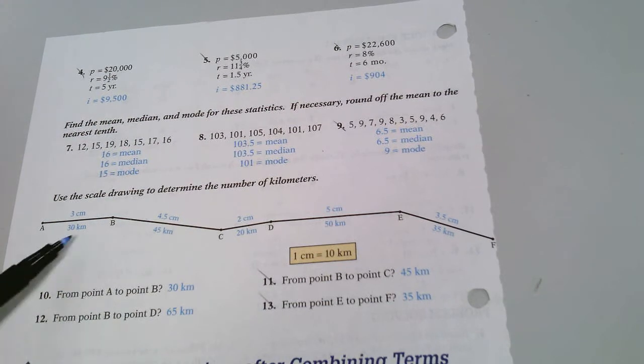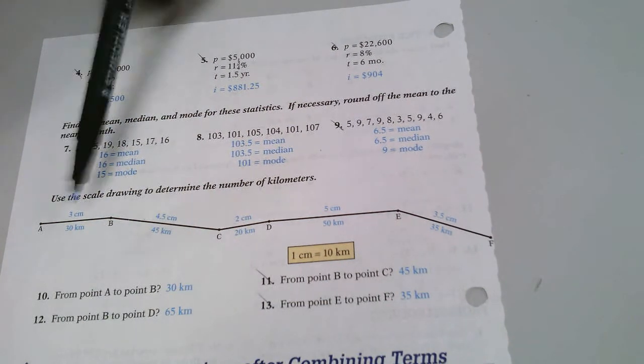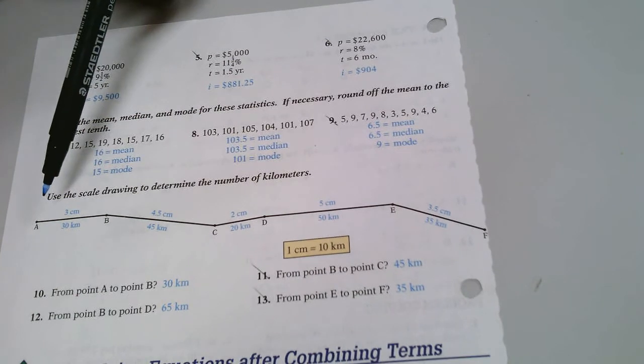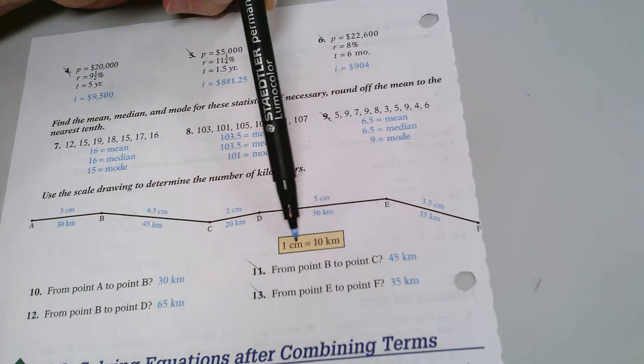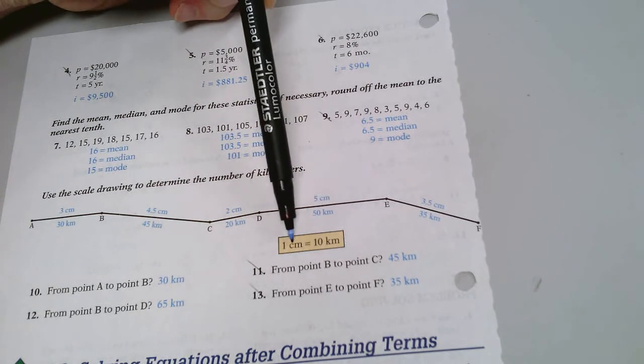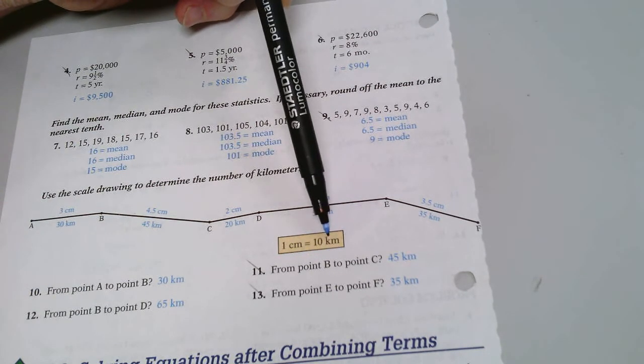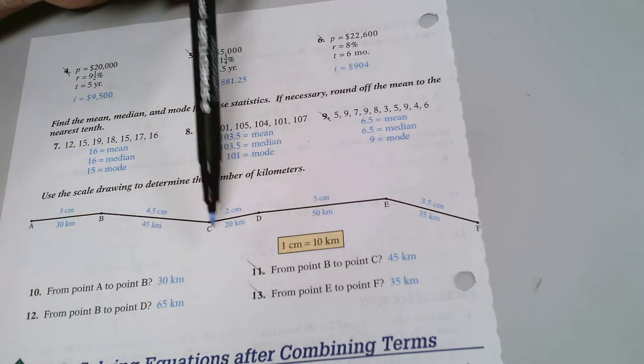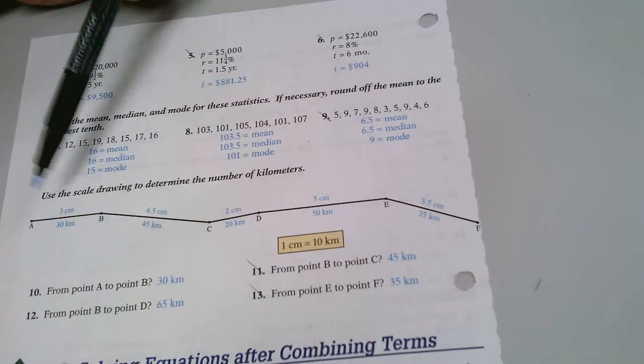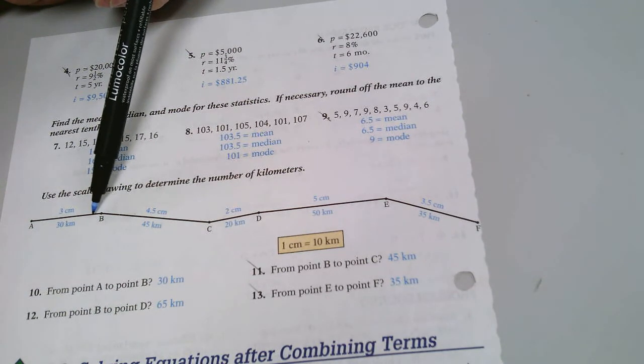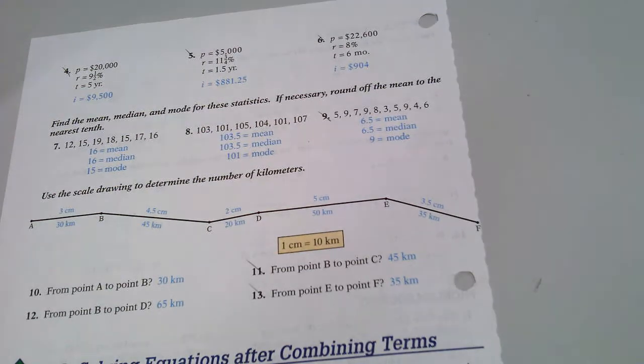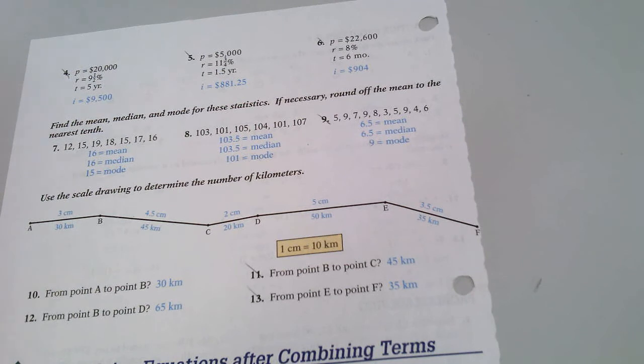For these, if you forget how to do these, finding distances on maps, you can set up a ratio. All you have to do is look at the actual scale here, or the legend, which is 1 centimeter equals 10 kilometers. And that would be your first ratio, 1 over 10. And then you just figure out how far this is by measuring. And that would be your third term in your second fraction. And then you can figure it out all by a ratio to do questions 10 and 12 if you get stuck. That was easy.